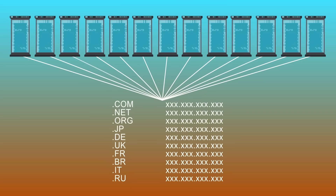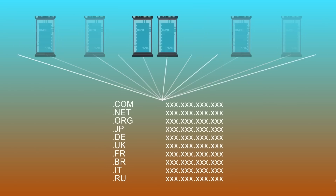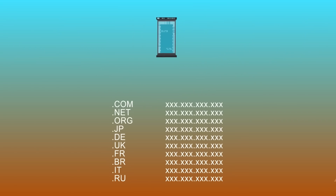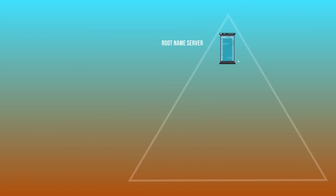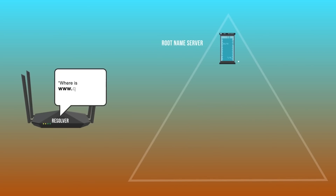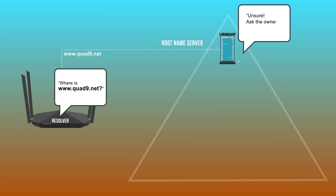TLD stands for top level domain, and it's the dot-something you'll see at the end of a web address. Dot net is a TLD, dot com is a TLD, dot UK is a TLD, dot CH is a TLD. There are around 1,500 of these top level domains, and the 13 root name servers know who controls each of them. Your resolver will pick a root name server more or less at random and ask it: where can I find www.quad9.net? The root name server will say, I don't know the address for that, but I know who owns dot net, so go ask them.